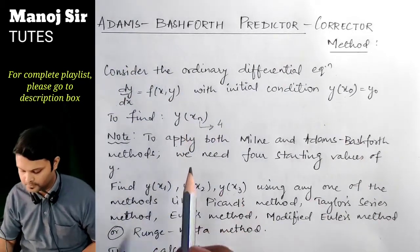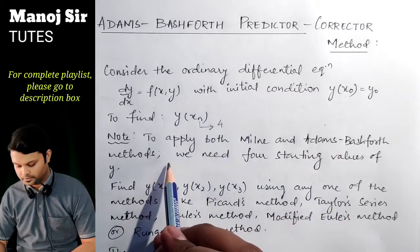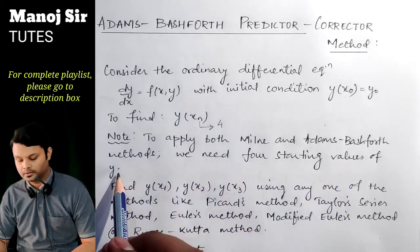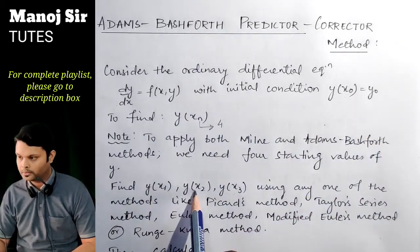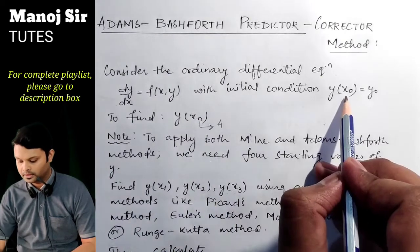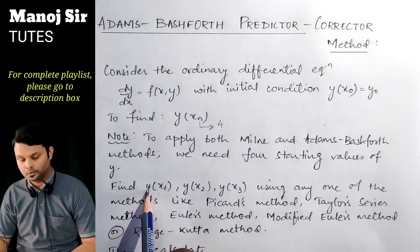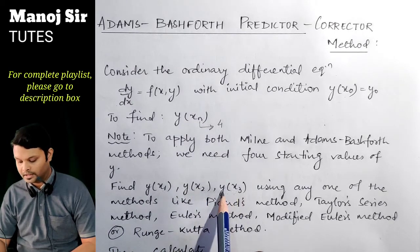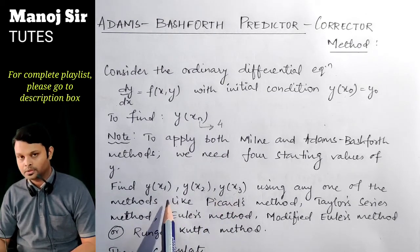To apply both Milne's and Adams-Bashforth methods, we need 4 starting values of y: y₀, y₁, y₂, and y₃. That is, at x₀ y = y₀, at x₁ y = y₁, at x₂ y = y₂, and at x₃ y = y₃. Now, suppose these values are not given in the problem.